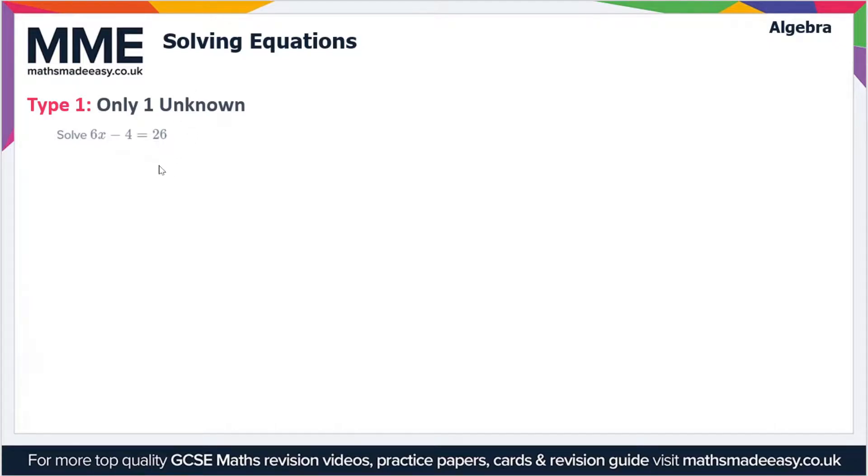A linear equation just means we only have one power of the unknown term, so that's x to the one in this case, rather than x squared or x cubed. Here we have 6x minus 4 is equal to 26. Now, in order to solve this equation, what we have to understand is that any operation you do to one side of the equation you must also do to the other side.